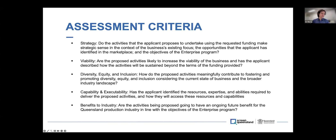In terms of the assessment criteria — and this is really important for you to pay attention to, as this is ultimately what your applications will be measured against — there are five criteria. The first is really around strategy: whether the application and what you're proposing makes sense in the context of your existing business focus, the opportunities you've identified in the marketplace, and the objectives of the actual program, making sure there's a good alignment to those.